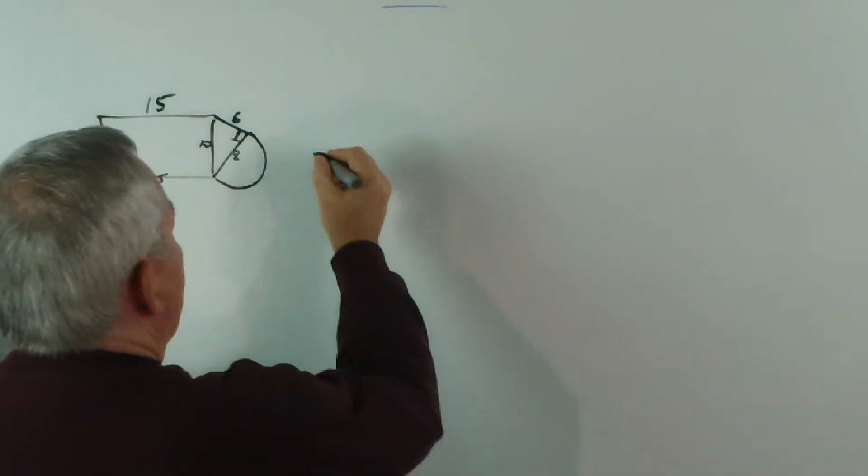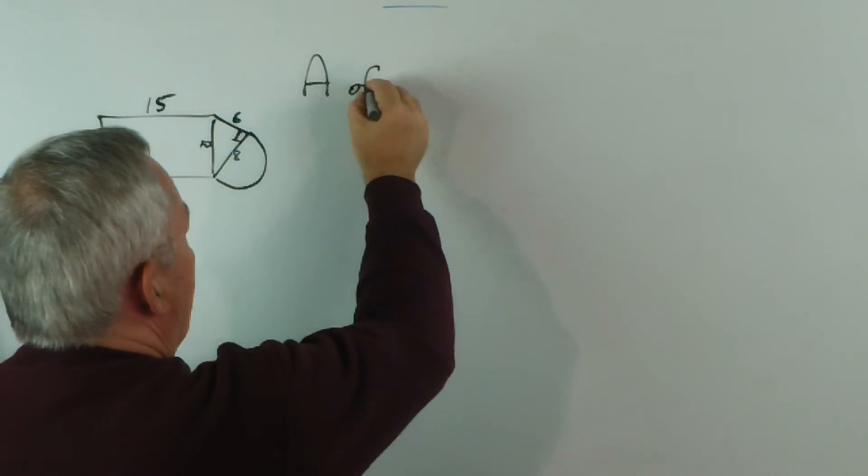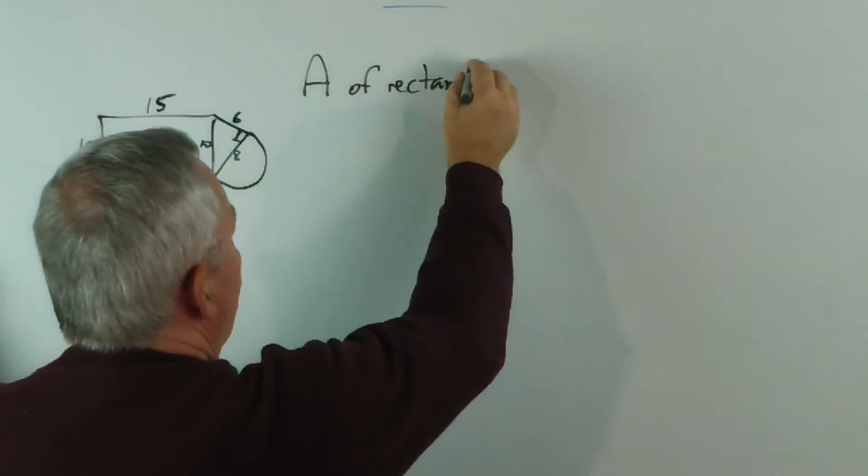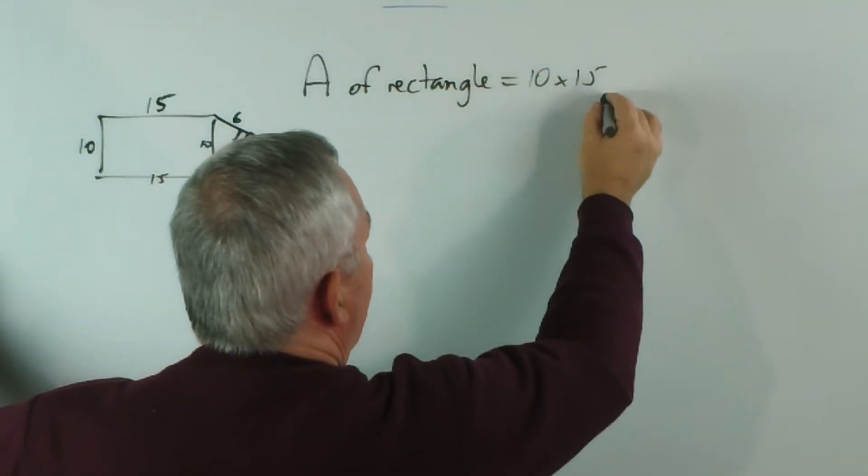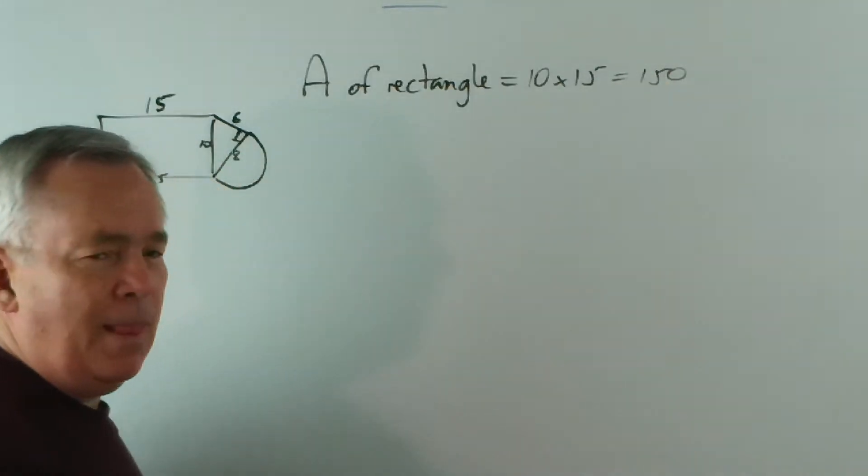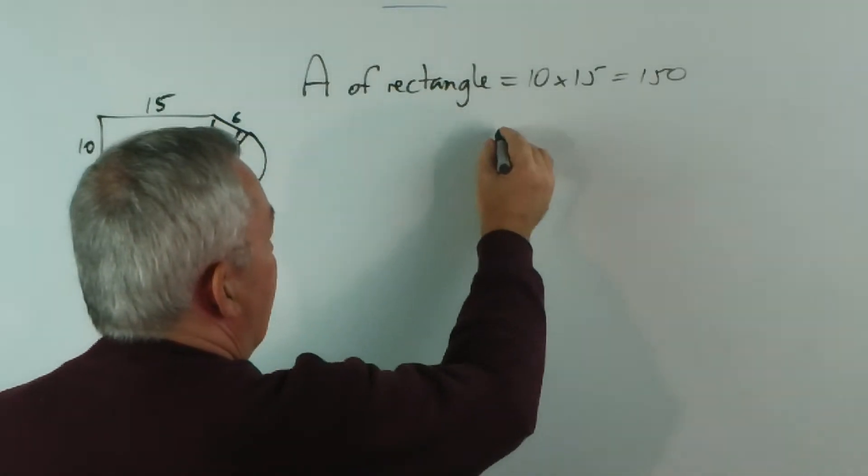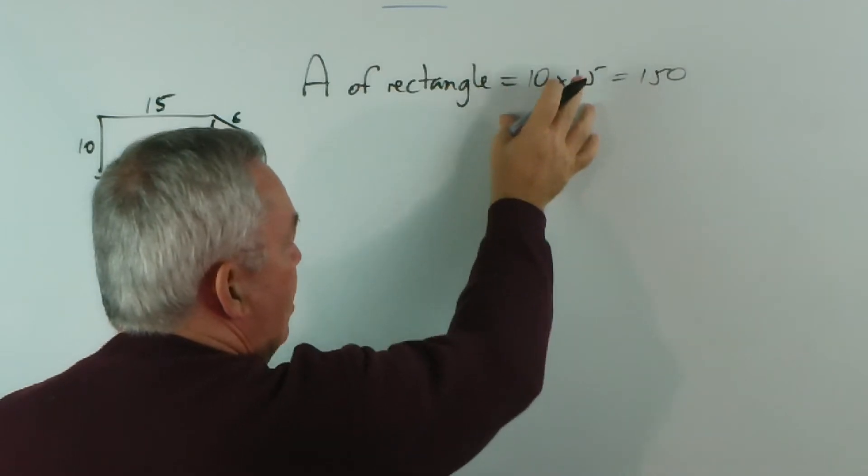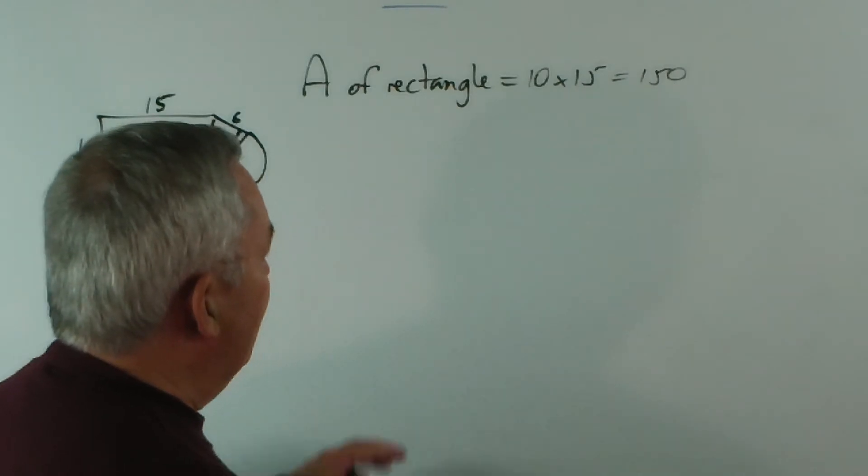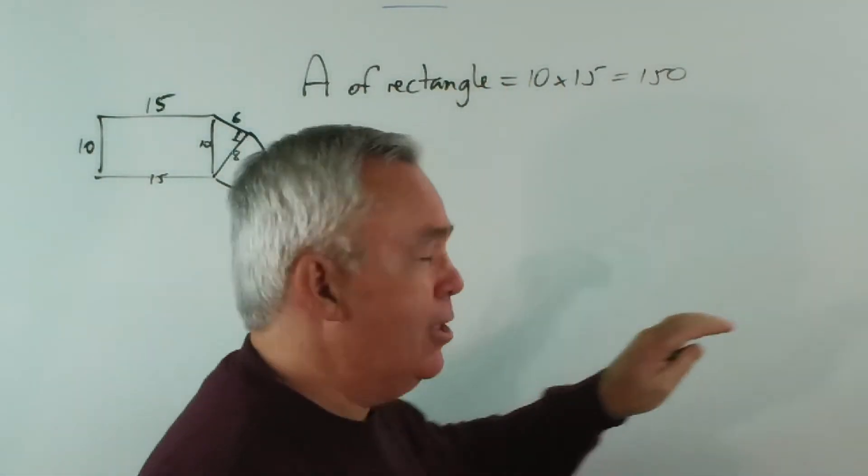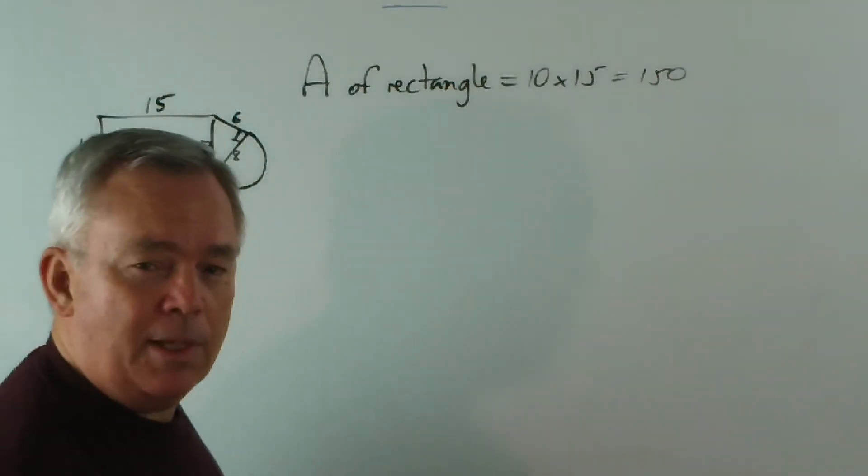An improvement on it is actually to say something like area of the rectangle equals ten by fifteen equals one fifty. That's an improvement. What I think is a greater improvement is to write this equals underneath and tidy up the presentation on the page. But still, you end up with three separate calculations for the three separate areas and then have to add them together in a fourth calculation to get the total.